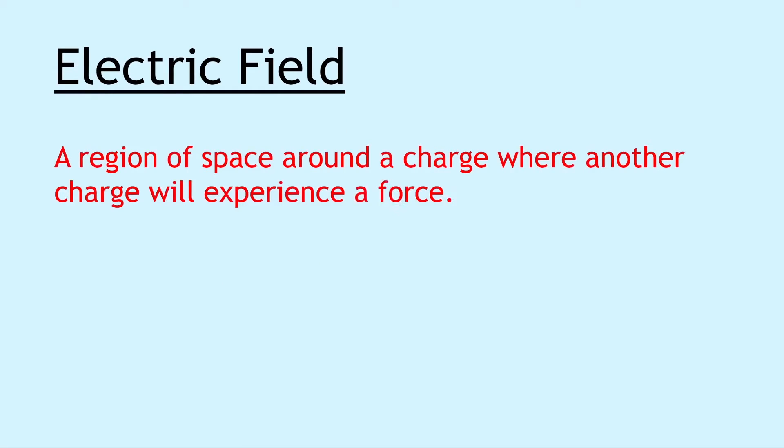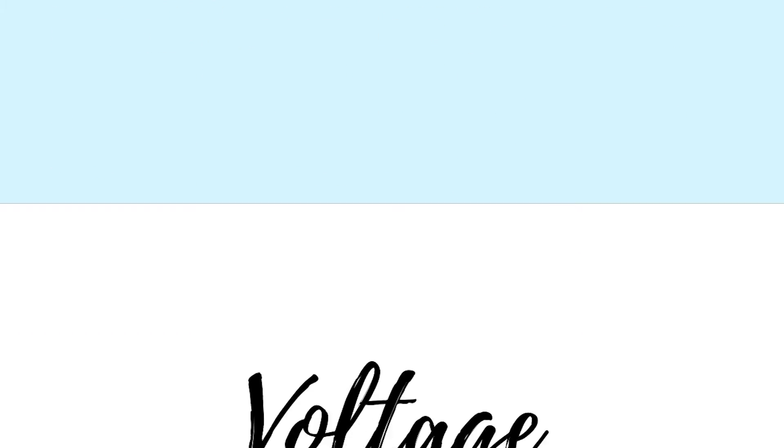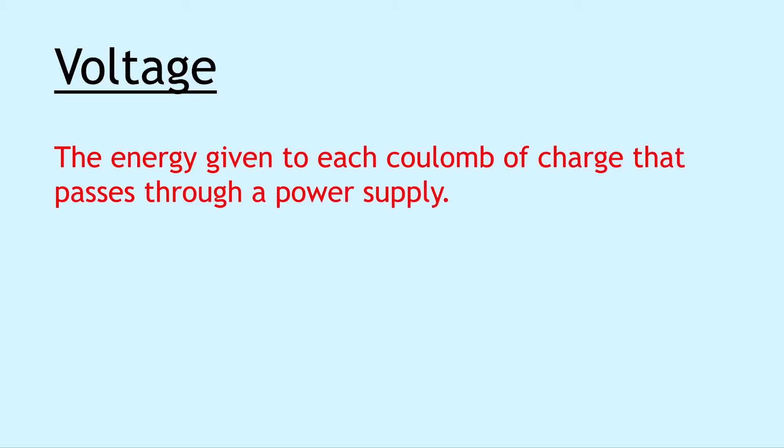The first definition is for electric field. An electric field is a region of space around a charge where another charge will experience a force. Next we have voltage, also known as potential difference, and this is the energy given to each coulomb of charge that passes through a power supply. Remember, this is identical to the definition for EMF or electromotive force from the electricity topic.